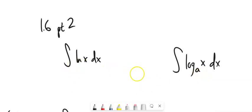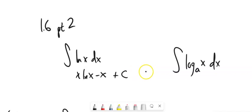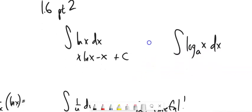For natural log, I'm just going to tell you what it is. The integral of ln(x) is x times the natural log of x minus x, plus some constant. You can factor an x out of here, so sometimes this will be written as x times (ln x minus 1) plus C.